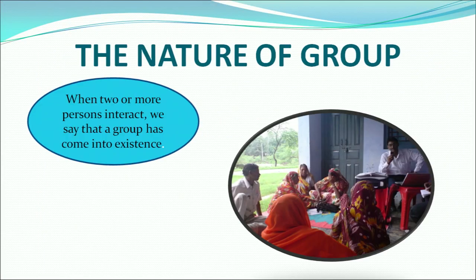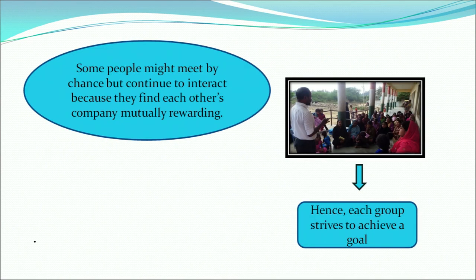The nature of group. When two or more persons interact, we say that a group has formed or come into existence. Some people meet by chance but continue to interact because they find each other's company mutually rewarding. Therefore, each group strives to achieve a goal.